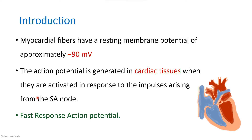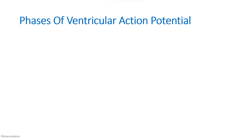The cardiac action potential is also called the fast response action potential. In cardiac tissue, there are two different types: the fast response action potential in normal cardiac tissue, and the slow response action potential in the SA node and AV node, which are pacemaker tissues.